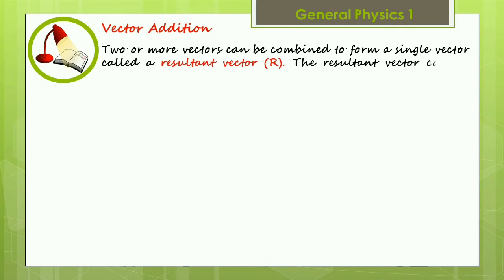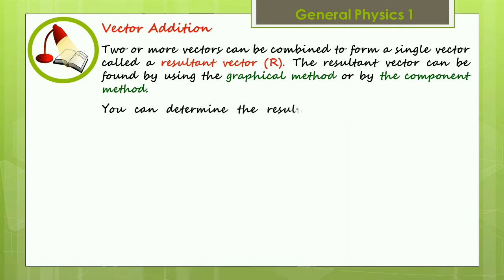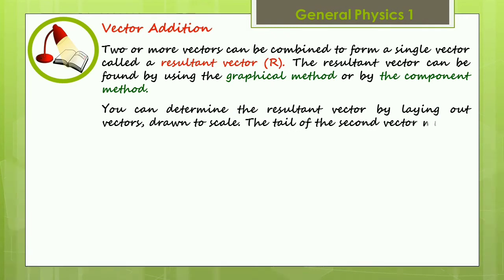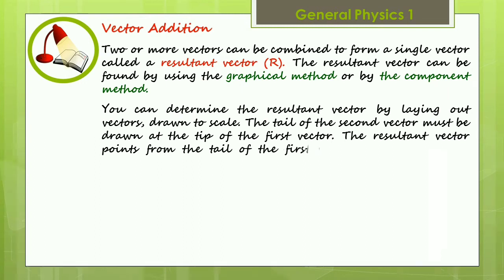Two or more vectors can be combined to form a single vector called a resultant vector r. The resultant vector can be found by using the graphical method or by the component method. You can determine the resultant vector by laying out vectors drawn to scale. The tail of the second vector must be drawn at the tip of the first vector. The resultant vector points from the tail of the first vector to the tip of the second vector.